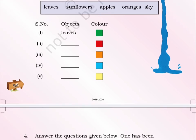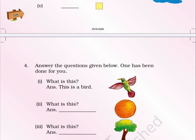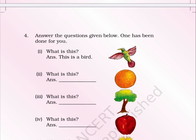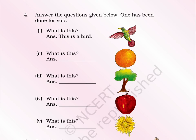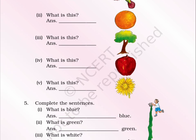Page No. 59. 4. Answer the questions given below. One has been done for you. 1. What is this? The answer is a bird, because on the right there is a picture of a bird. 2. What is this? Fill in the blank by identifying the object on the right side. 3. What is this? Write the answer by looking at the picture given on the right. 4. What is this? Fill in the blank by looking at the picture on the right side. 5. What is this? Write the answer in the blank by looking at the picture on the right side.